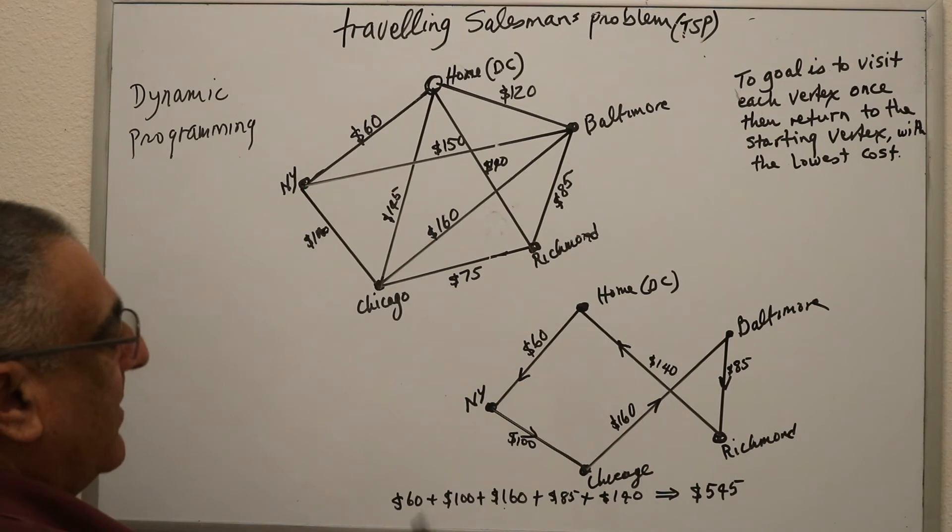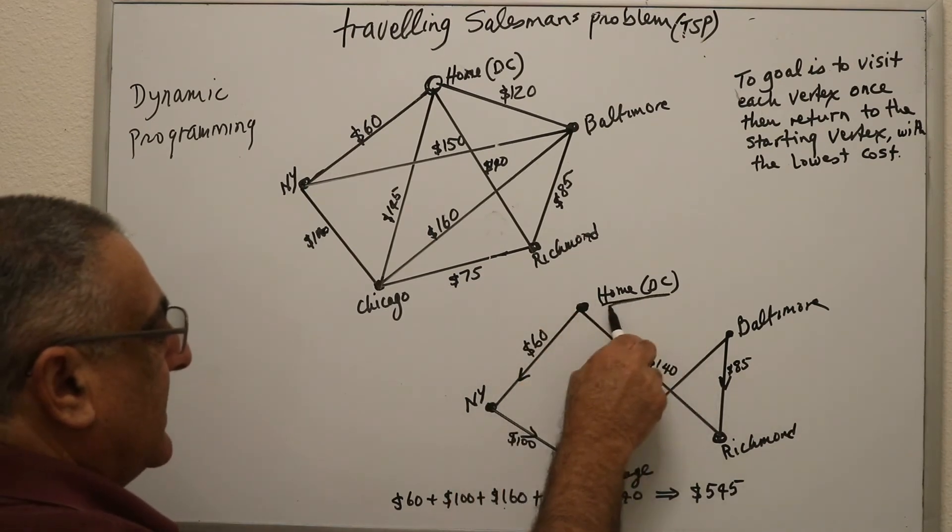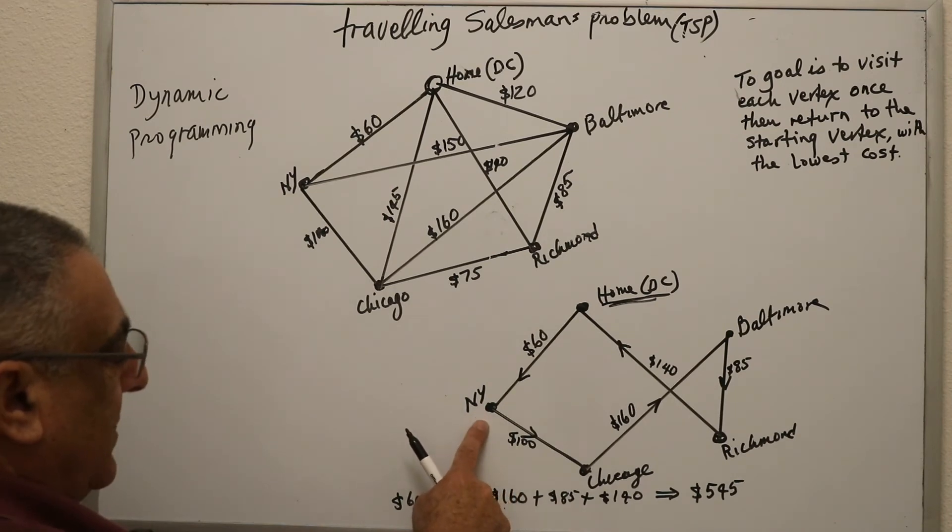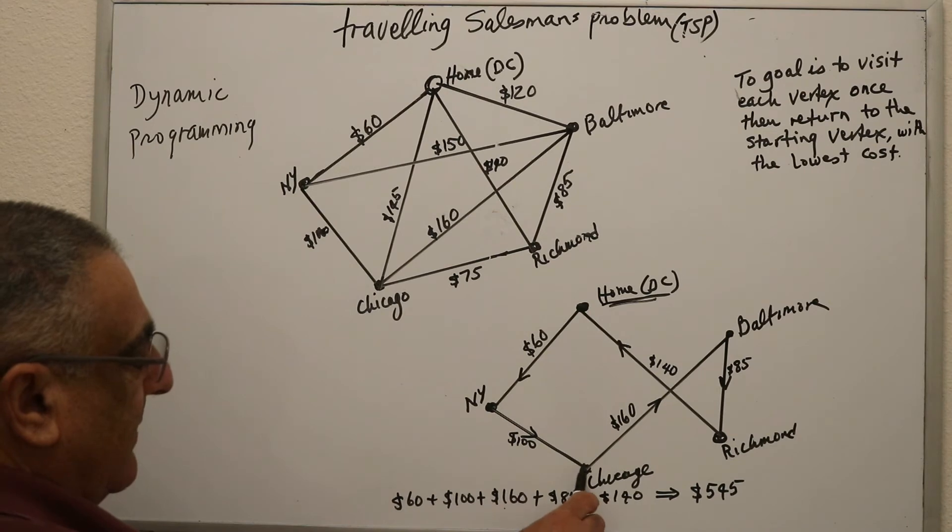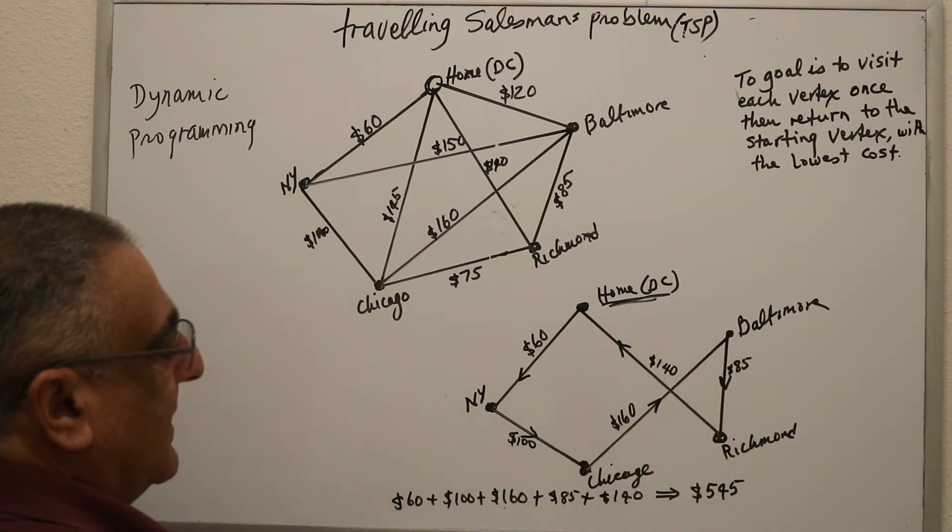So this is what I end up with. From home, my source, this is the home, the source, I could go to New York, that's my travel. And then I can visit Chicago, that's another hundred dollars. And then from Chicago I can visit Baltimore, that's a hundred and sixty dollars.